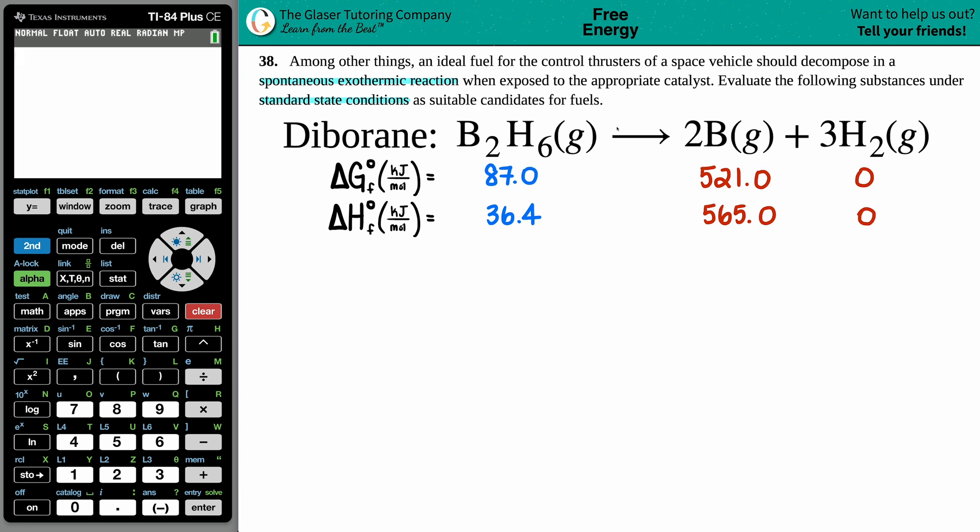It needs to break down in a spontaneous exothermic reaction. Now there's two things going on here—there's one variable that controls spontaneity and there's one variable that controls whether something is exothermic or endothermic.